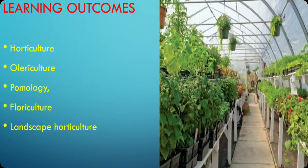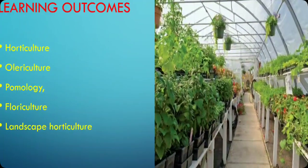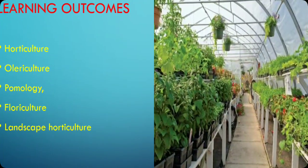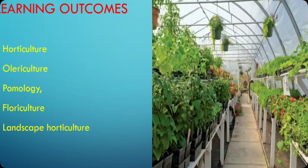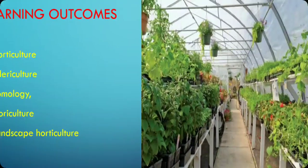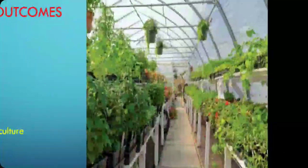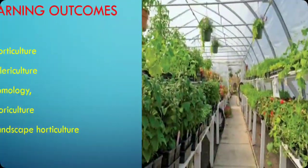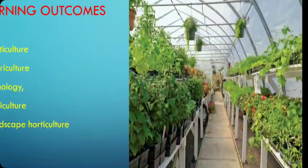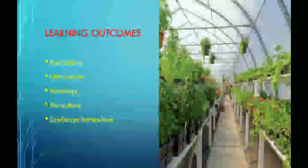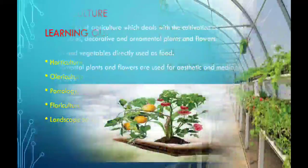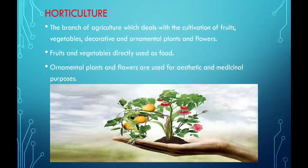So, the learning outcomes are: Horticulture, Olericulture, Pomology, Floriculture, and Landscape Horticulture. These are the different types of cultures we are going to find out in this video lesson. What does this mean? Let us see it in detail.